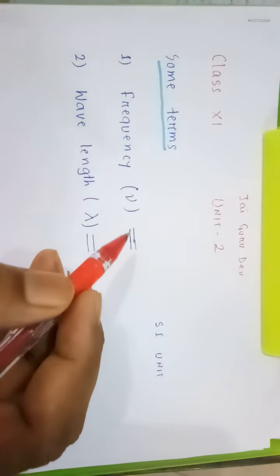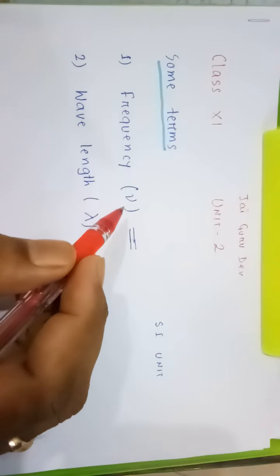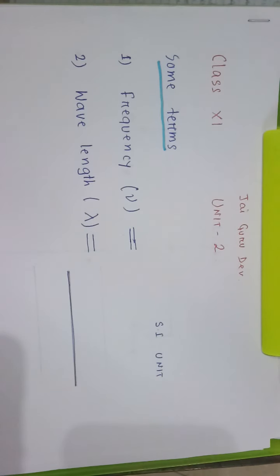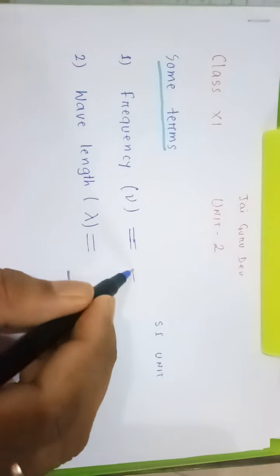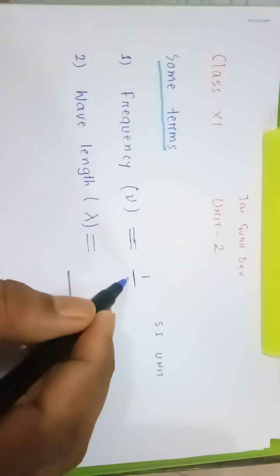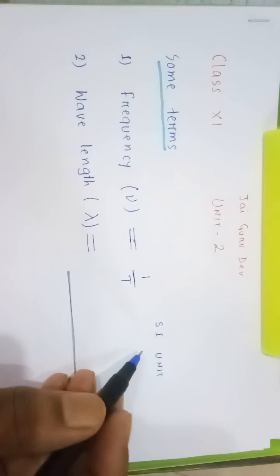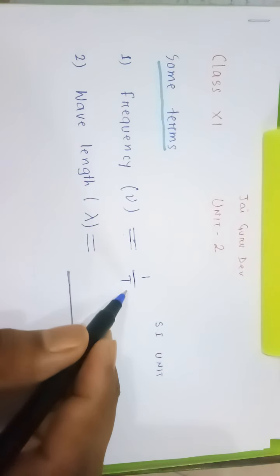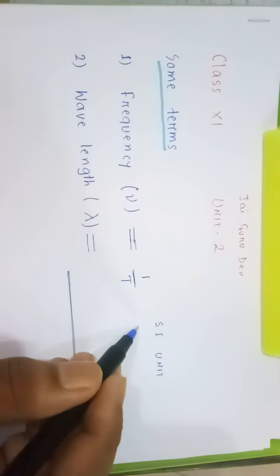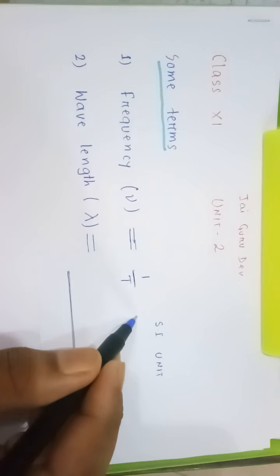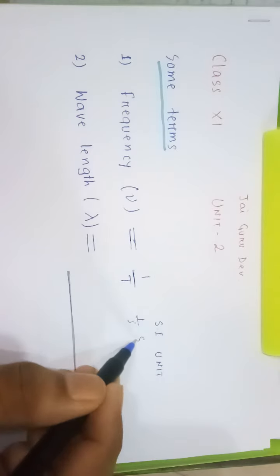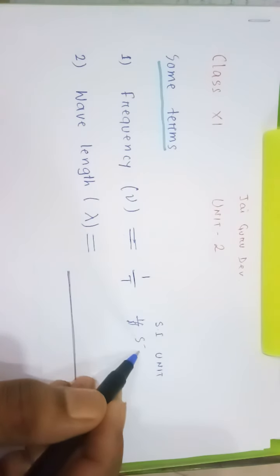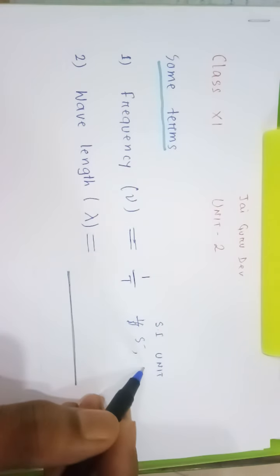The first point is frequency, represented by Nu. Frequency is nothing but the reciprocal of time period T. The unit of time period is seconds, so frequency is one by second, or second inverse. Second inverse is written as Hertz.